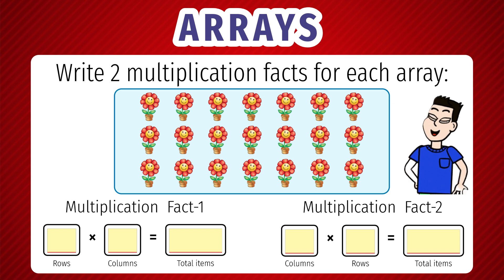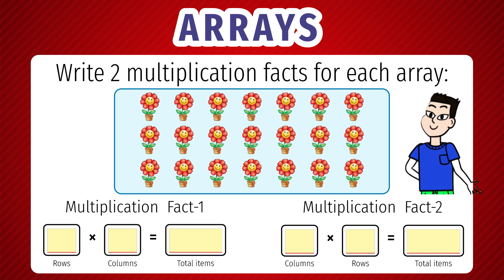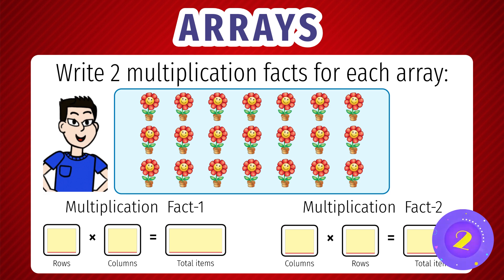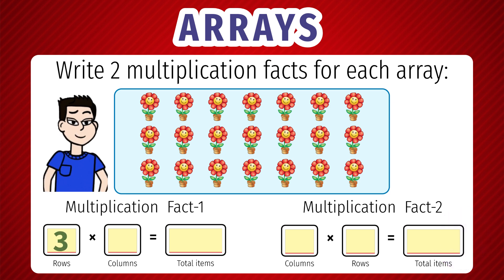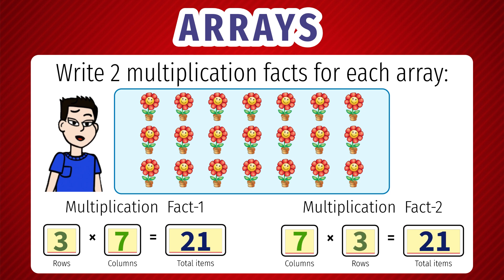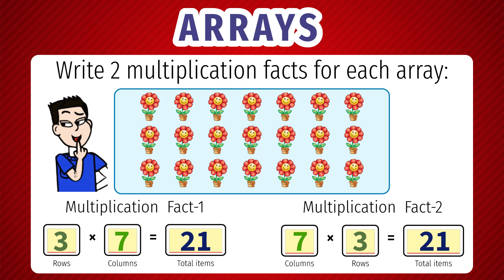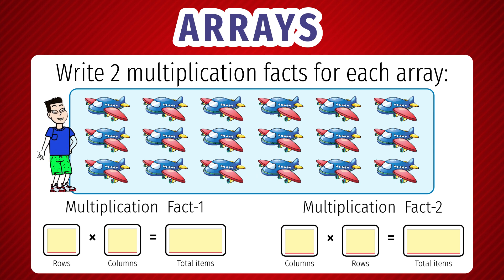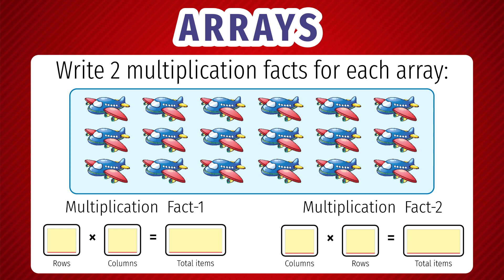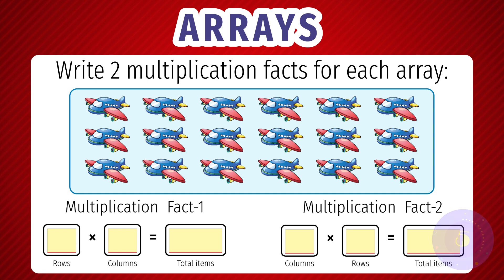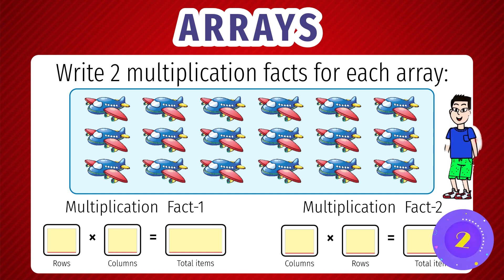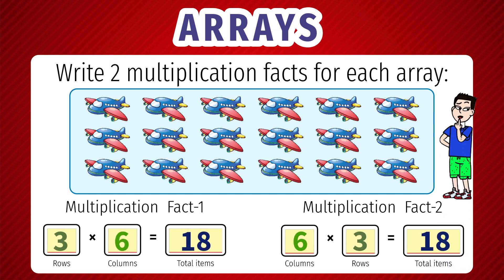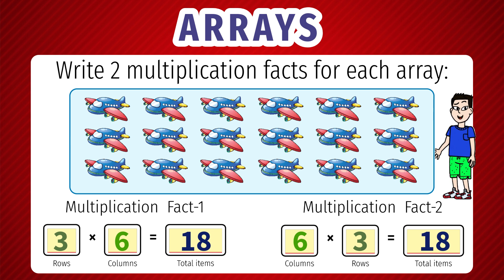Write two multiplication facts for the array shown. We have 3 rows and 7 columns. The multiplication facts are 3 into 7 equals 21, and 7 into 3 equals 21. Next question. Write two multiplication facts for the array shown. We have 3 rows and 6 columns. The multiplication facts are 3 into 6 equals 18, and 6 into 3 equals 18.